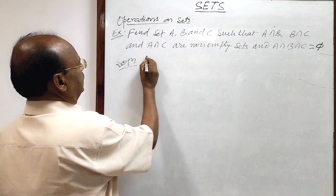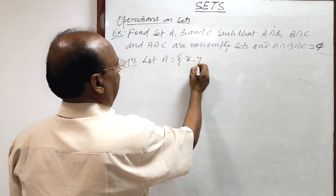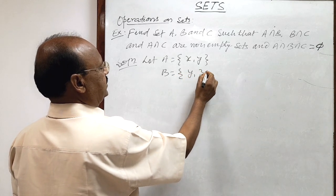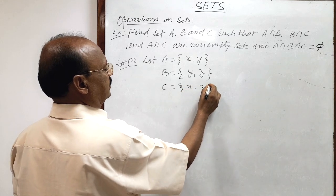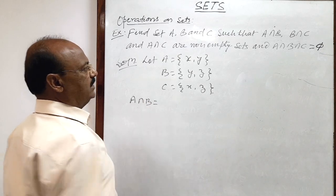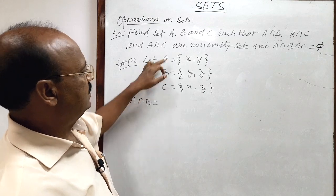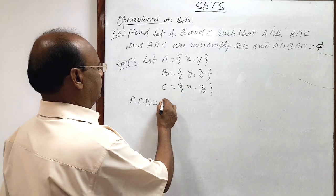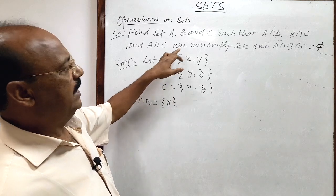Let set A have elements x and y, set B have elements y and z, and set C have elements x and z. Now, A∩B will consist of common elements in sets A and B. The common element here is y, so A∩B = {y}, which is a non-empty set.